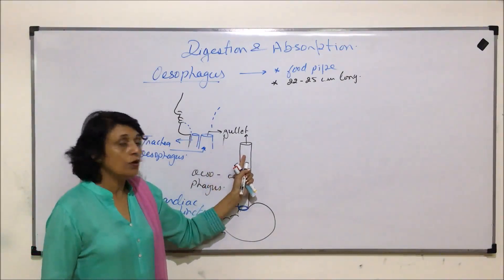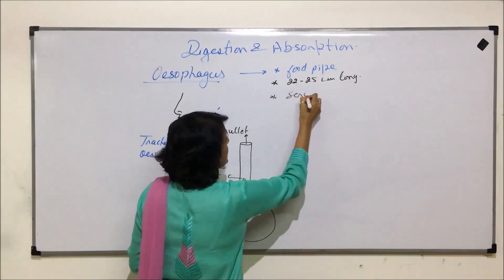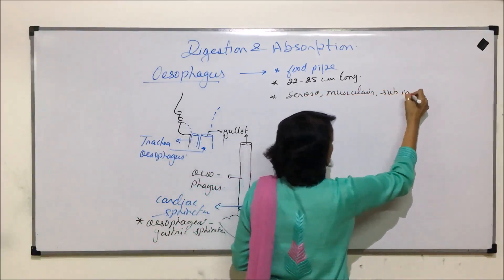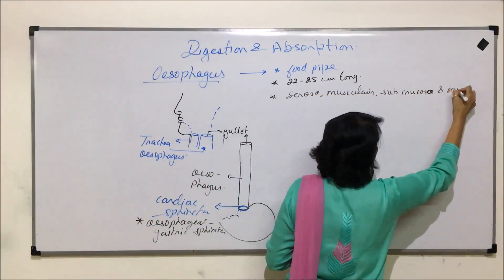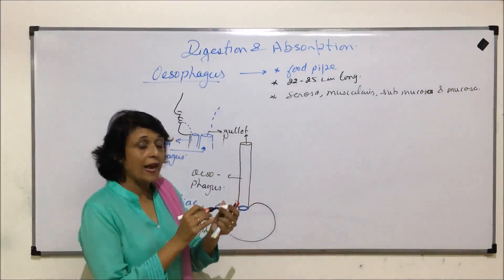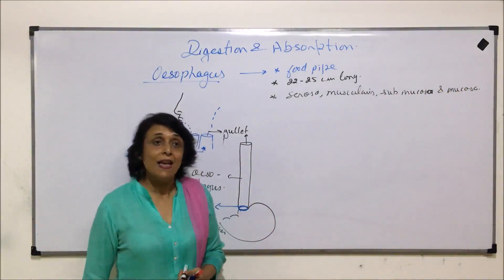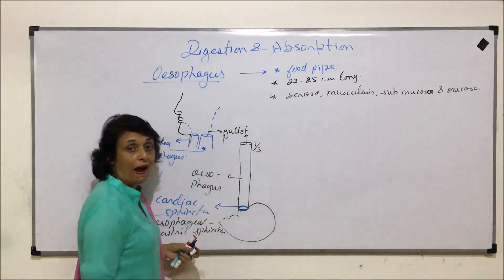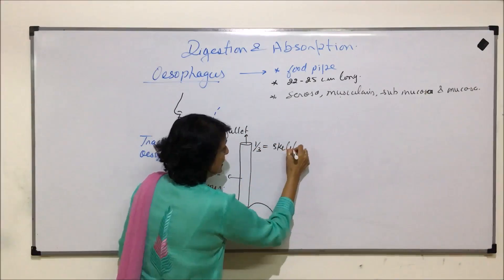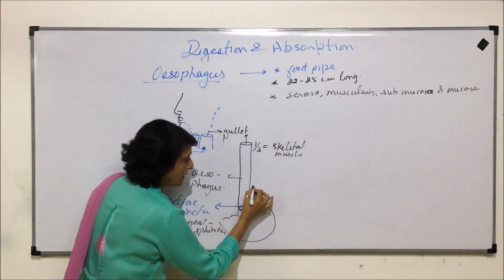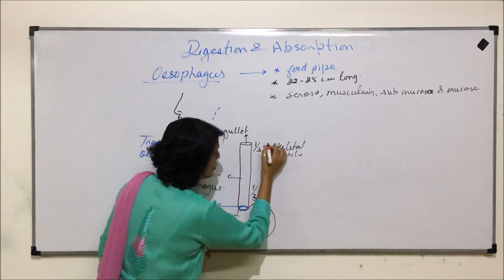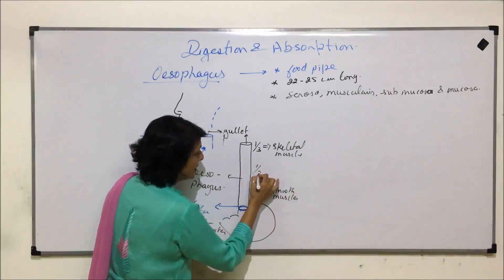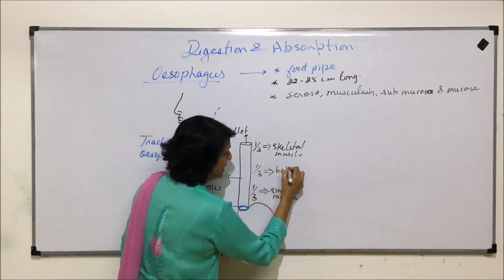We have seen the histology of all parts in general, and the esophagus also has the same four layers: serosa, muscularis, submucosa, and mucosa. The differences are in the muscularis layer, because the muscle distribution is slightly different. The upper one-third of the esophagus has skeletal muscles, the lower one-third has smooth muscles, and the middle one-third has both skeletal and smooth muscles.